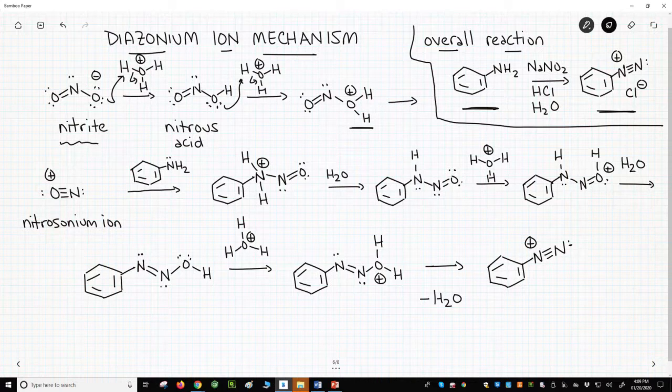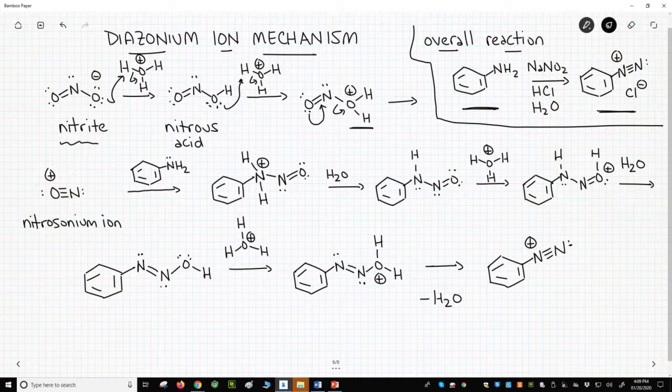We call this a leaving group, so it's going to leave, but not just leave. It will actually be pushed out by the lone pair on oxygen to form, as we move to the next line on the slide, an ion called a nitrosonium ion.